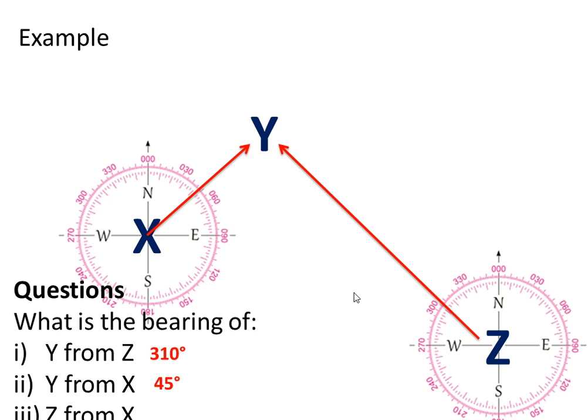Let's try the next one. Z from X. So we're leaving X travelling to Z. Line those two things up. It's going to be 115 degrees. It's all rather simple.